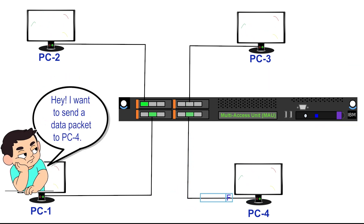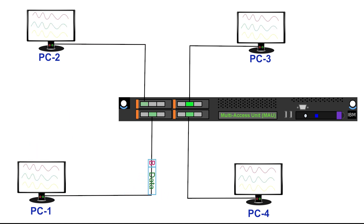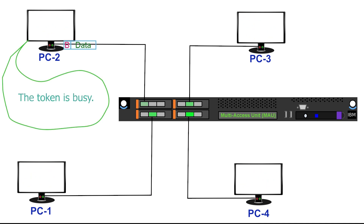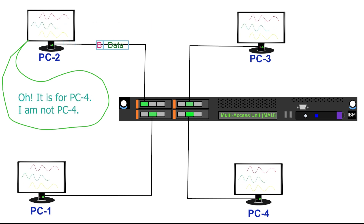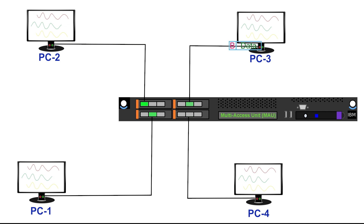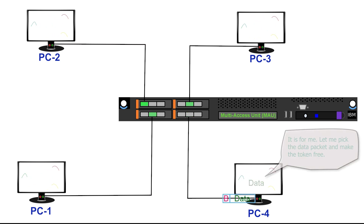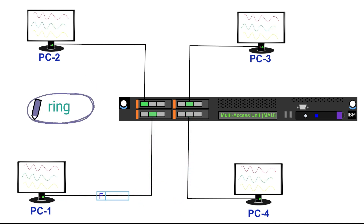If a node wants to send data, it must wait until it receives the token in a free state. When it gets the free token, it attaches data to it and changes its state to busy. The updated token with the data packet reaches the next node in the ring. Each node checks the token's state — a busy state means it contains a data packet. The node matches the destination address with its own. If it does not match, it transmits the token onward. This continues until the destination node receives the data packet, picks it up, changes the token state to free, and passes it to the next device.